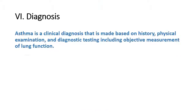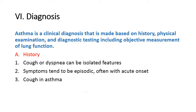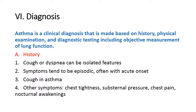Diagnosis: Asthma is a clinical diagnosis made based on history, physical examination, and diagnostic testing including objective measurement of lung function. A. History: 1. Cough or dyspnea can be isolated features. 2. Symptoms tend to be episodic, often with acute onset.